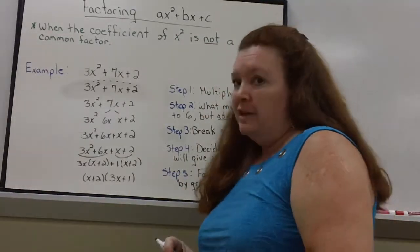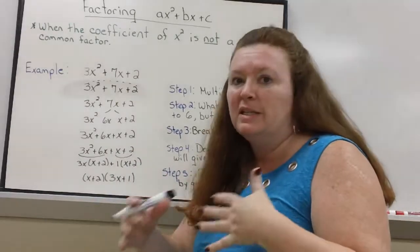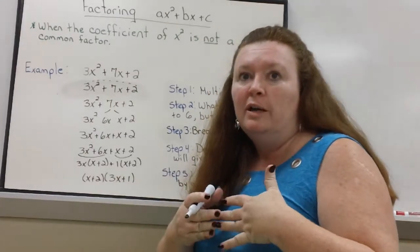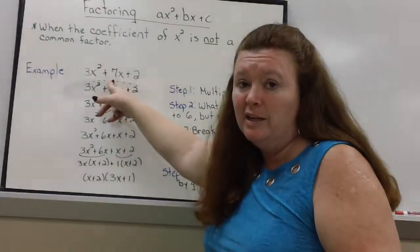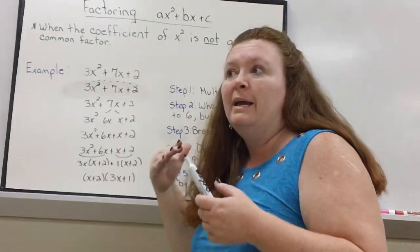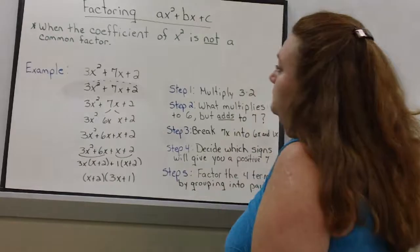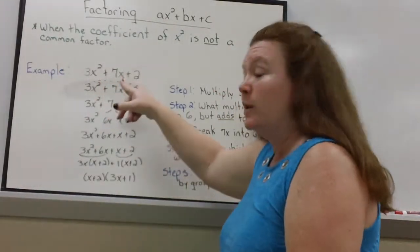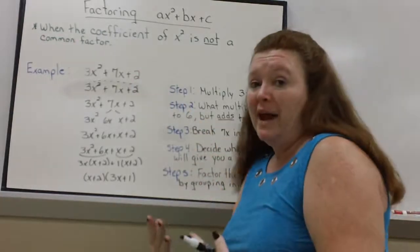So there's a guess and check method where you can just keep trying different things in the parentheses to see if you can get the trinomial that is given. But that can be frustrating. There's also a math process that we can do to find that answer. So here's my example: 3x squared plus 7x plus 2. I want to factor that.